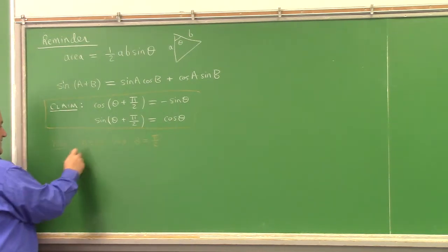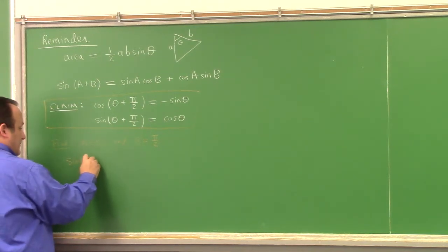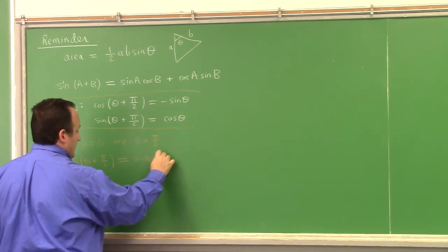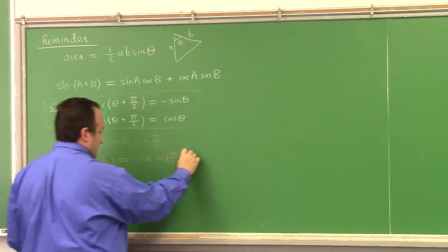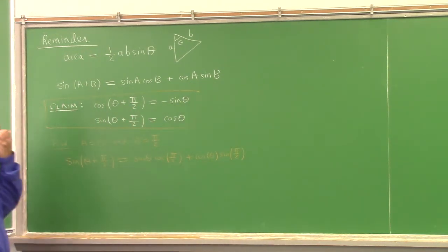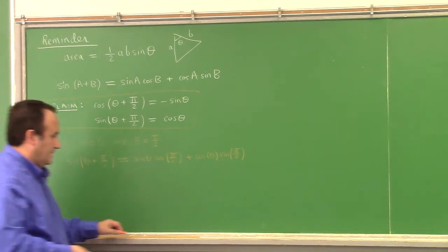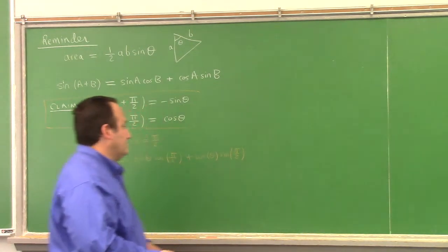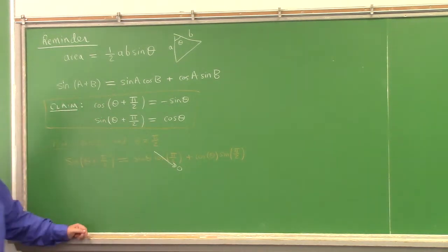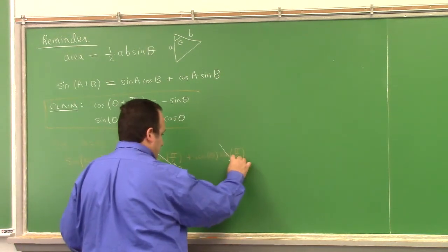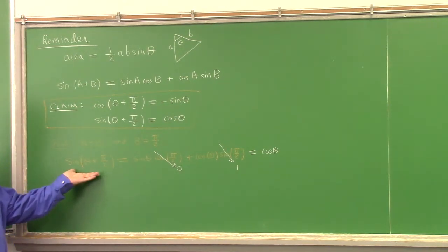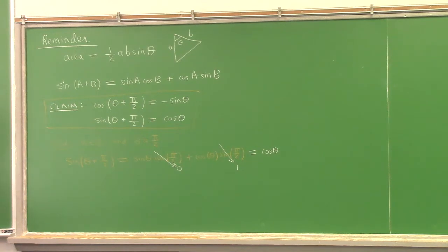Since that's what we're after — sine of theta plus pi over two — by the adding angles formula for sine, that equals sine theta cosine of pi over two, plus cosine theta sine of pi over two. But cosine of pi over two is zero and sine of pi over two is one. So what's this give us? Cosine theta. So sine of theta plus pi over two equals cosine theta — this is a direct algebraic proof.